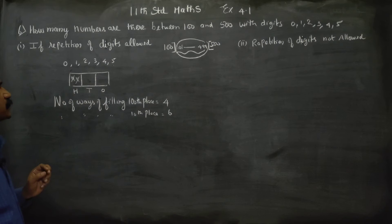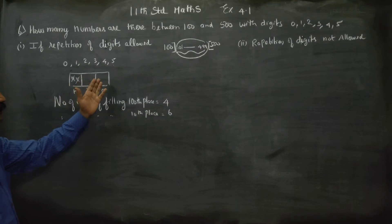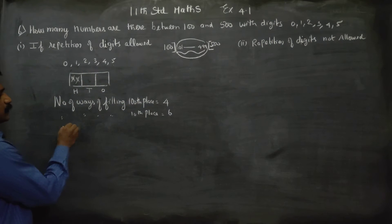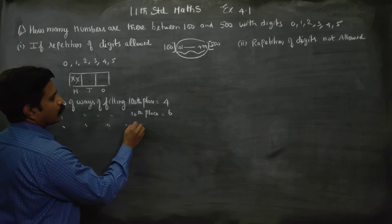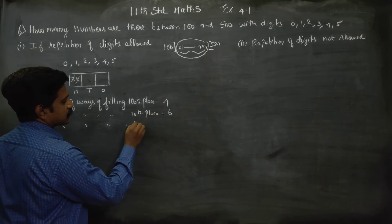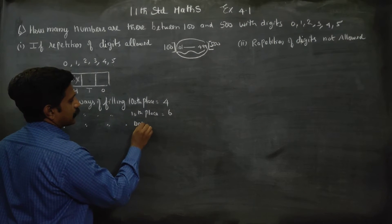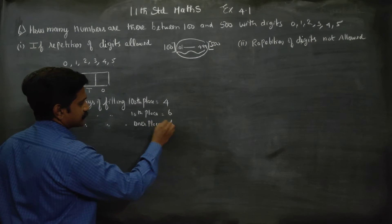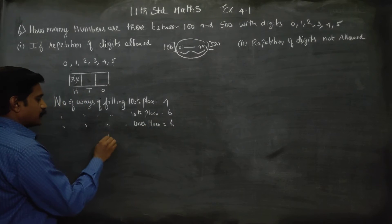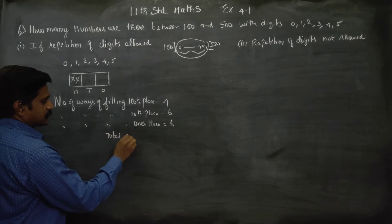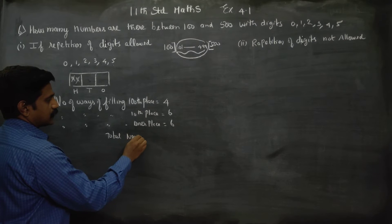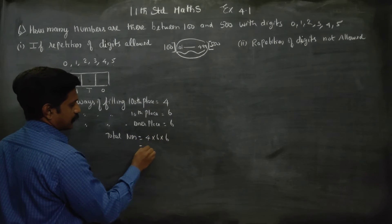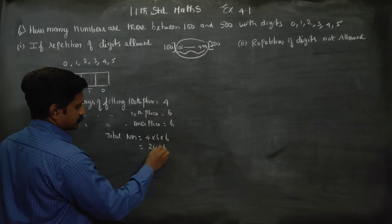Last — the unit place. The number of ways of filling the unit place is also 6 ways. Therefore, the total numbers is 4 into 6 into 6, which equals 144.